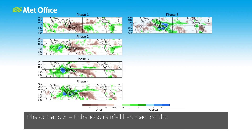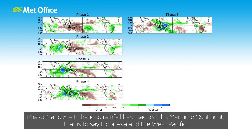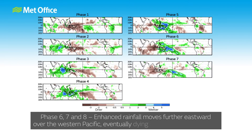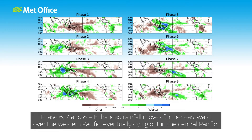Phases 4 and 5: enhanced rainfall has reached the maritime continent — that is to say Indonesia and the west Pacific. Phases 6, 7 and 8: enhanced rainfall moves further eastward over the western Pacific, eventually dying out in the central Pacific.